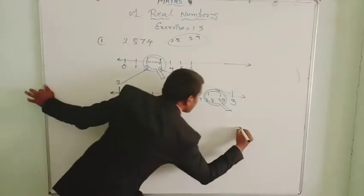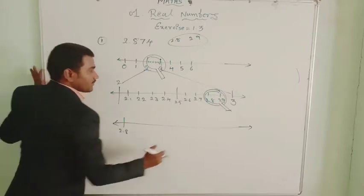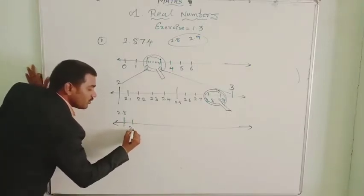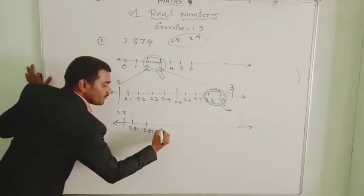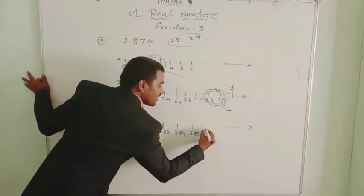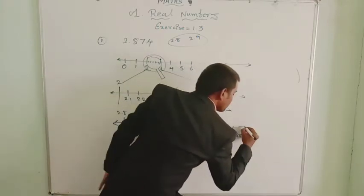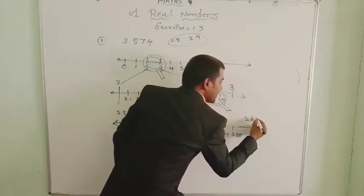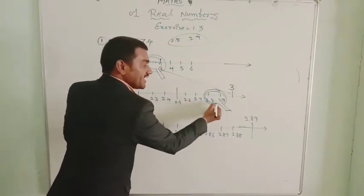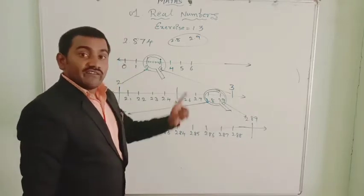We draw one more number line and observe very closely between 2.8 and 2.9. We get 2.81, 2.82, 2.83, 2.84, 2.85, 2.86, 2.87, 2.88, 2.89. By using the magnification glass between 2.8 and 2.9, we can see these numbers.